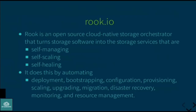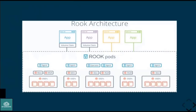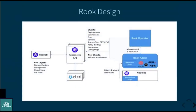What Rook actually does is set up Ceph across your nodes and disks. It knows where to set up the storage nodes, monitors, managers, gateways, and so on — all within your Kubernetes cluster. Here you can see the Rook architecture: it not only sets up Ceph but also provides access to Ceph through volume claims or directly, so you can use Ceph storage from within your containers. The Rook agent provides that access.